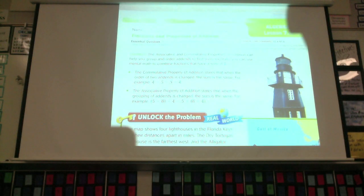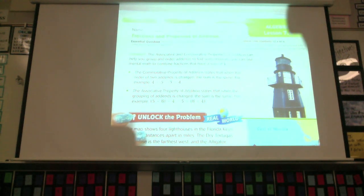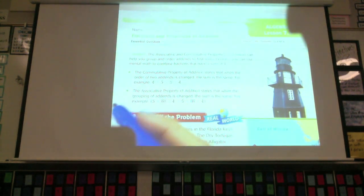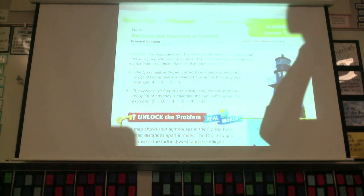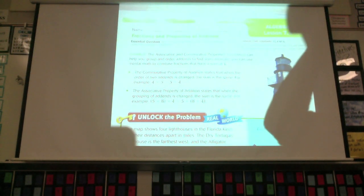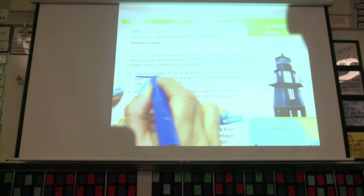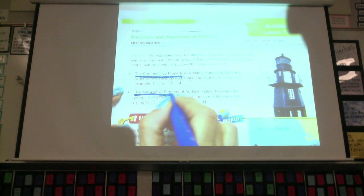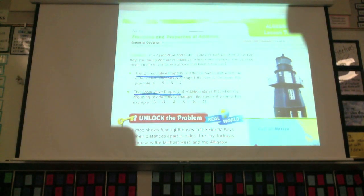We're on 7 dash. There are a couple properties of addition that we're going to be working with today, and they are the commutative property and the associative property. Raise your hand if you remember hearing those properties before. Good, because we started the year with those, so those should not be new. The commutative property and the associative, go ahead and underline those real quick. And let's talk about what they mean.